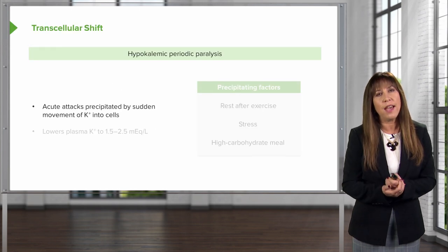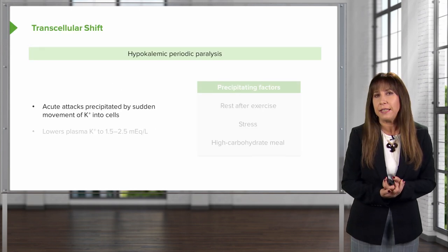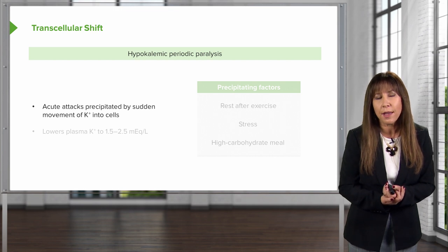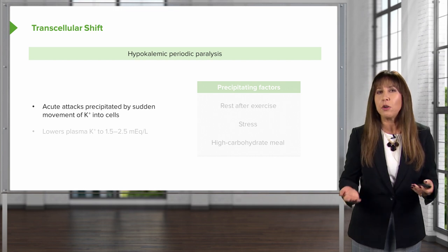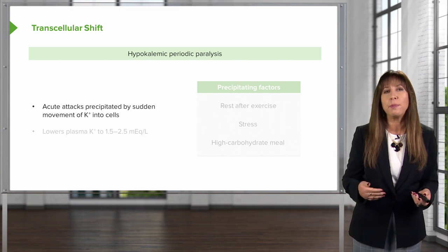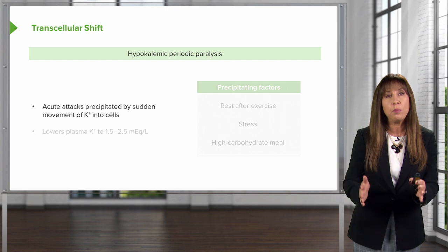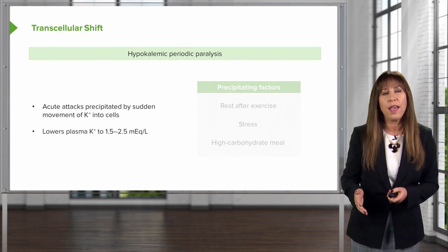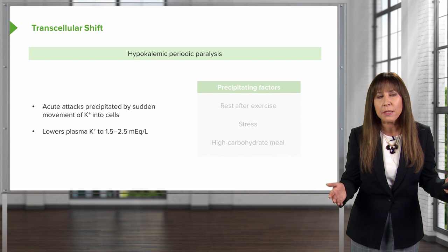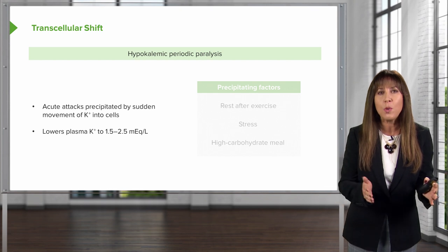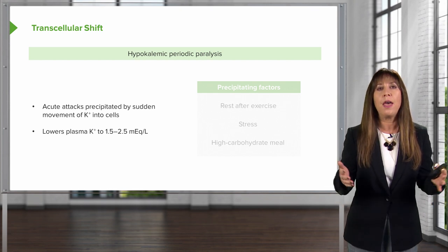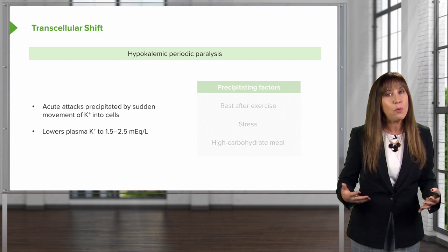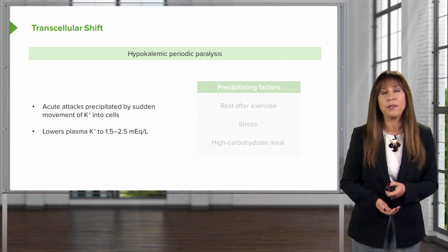Finally, there is an entity termed hypokalemic periodic paralysis, characterized by acute attacks precipitated by sudden movement of potassium into cells. When that happens, it can lower plasma potassium as low as 1.5 to 2.5 milliequivalents per liter, which is why patients can get paralyzed from this.